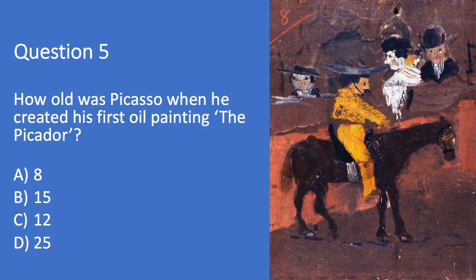Question five — an age question this time. How old was Picasso when he created his first oil painting, the Picador? Was he A. Eight, B. Fifteen, C. Twelve, or D. Twenty-five?